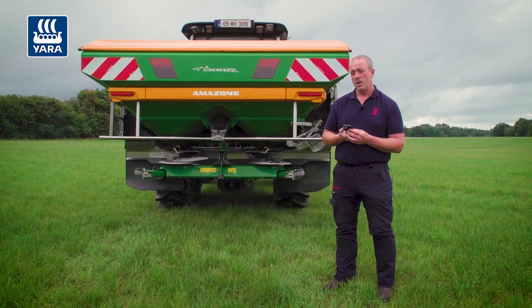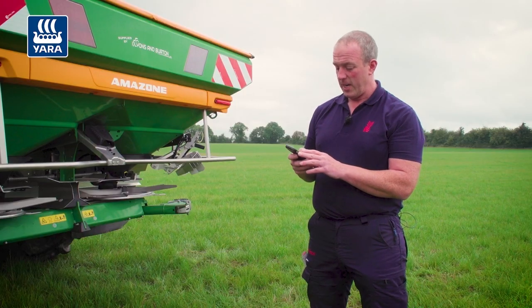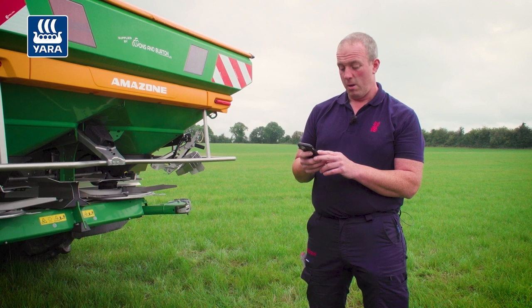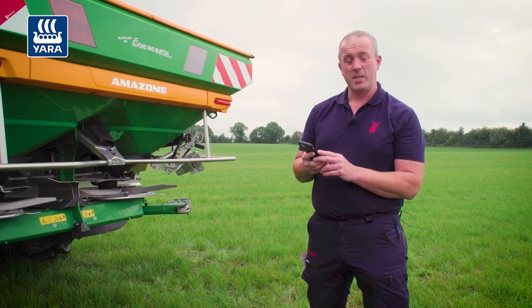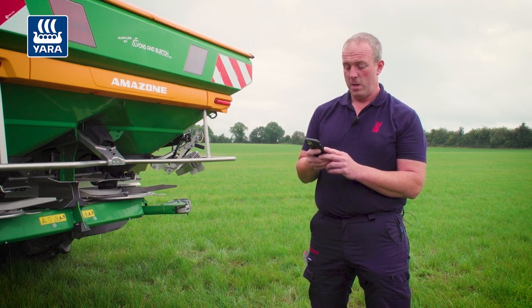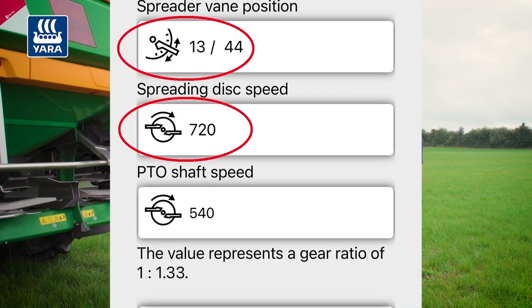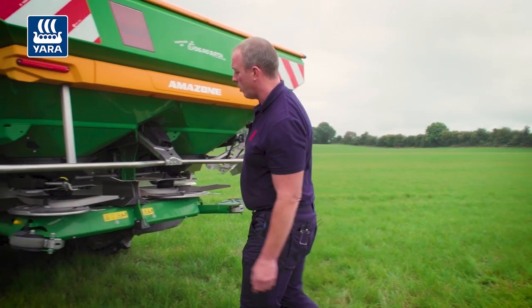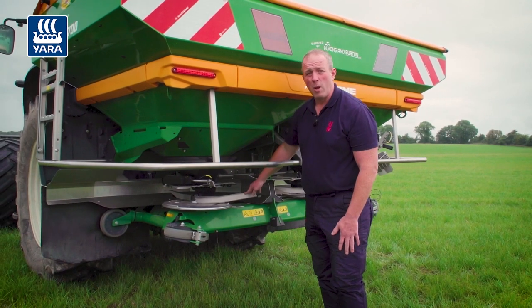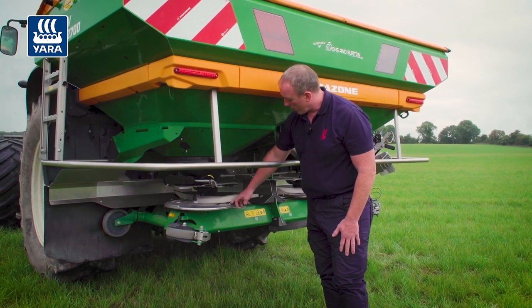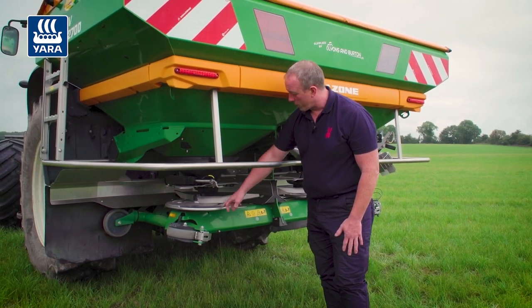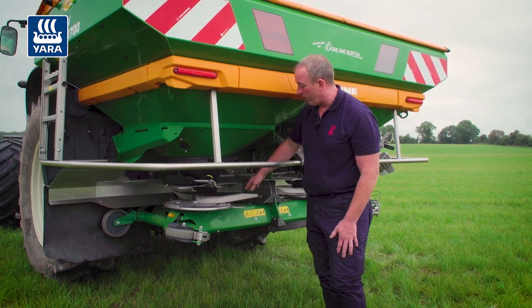We then move to the machine and set the vanes. For 18 meters, the settings given are 26 and a half for the shutter position, and more importantly 13 and 44 for the vane settings. We're now going to show you how to adjust the vane settings on the machine. We have a long and a short vane, and numbers on the disc corresponding to the setting chart.